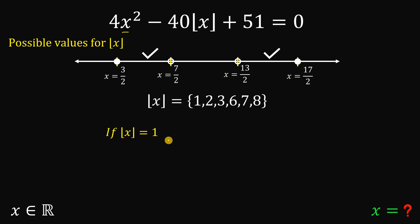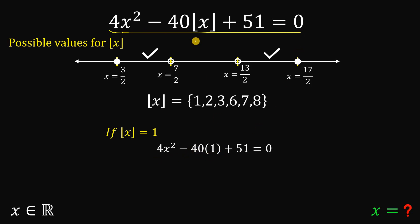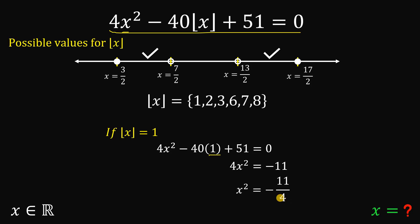First case: if the floor value of x equals 1. Substituting into the equation, we have 4x squared minus 40 times 1 plus 51 equals 0. Simplifying, we get 4x squared equals negative 11, so x squared equals negative 11 over 4. Taking the square root gives an imaginary number. Since x must be a real number, this case is not possible.